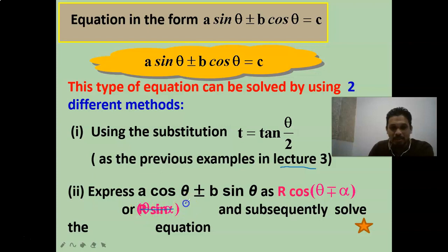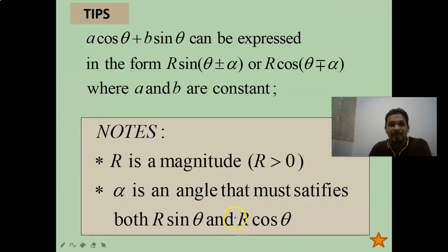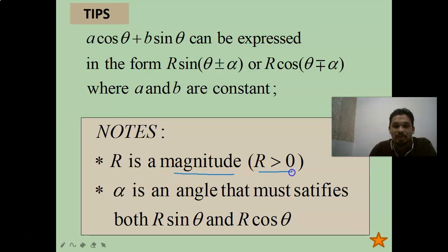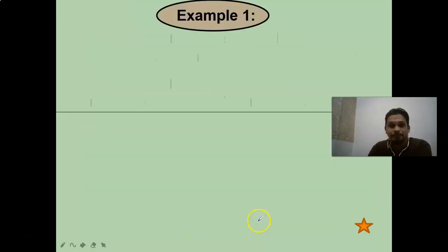We can write R·sin(θ ± α) and R·cos(θ ± α). The difference is that we get R·cos(θ ± α) and R·sin(θ ± α). So a·cosθ + b·sinθ can be expressed in the form R·cos(θ ± α) or R·sin(θ ± α). Here R is the magnitude, so R is always positive — R is greater than zero. Alpha is an angle that must satisfy both the R·sinθ and R·cosθ conditions.